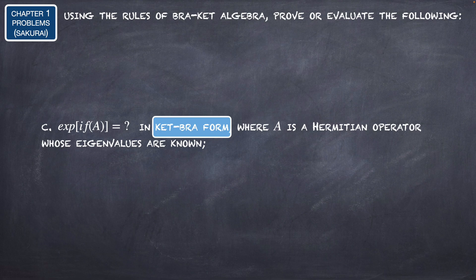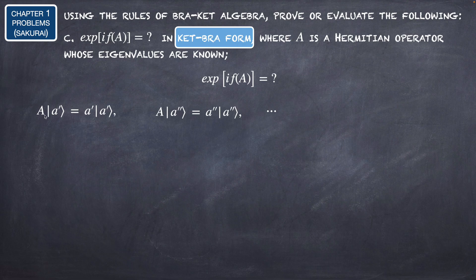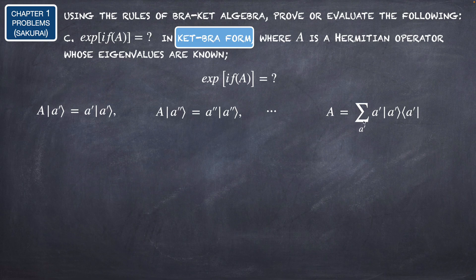Now let's evaluate the exponential of iF(A) in ket-bra form, where A is a Hermitian operator whose eigenvalues are known. First, let's write the eigenvalue equation of the operator A: A acting on its basis vector |a'⟩ results in the eigenvalue a' multiplied by the eigenvector |a'⟩, and similarly for a'' and every ket in the basis of A.